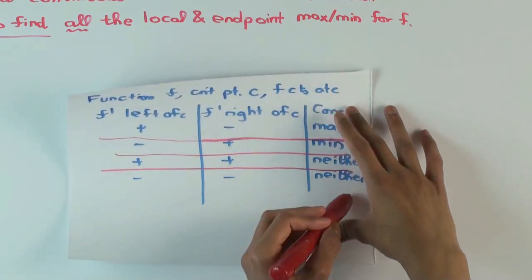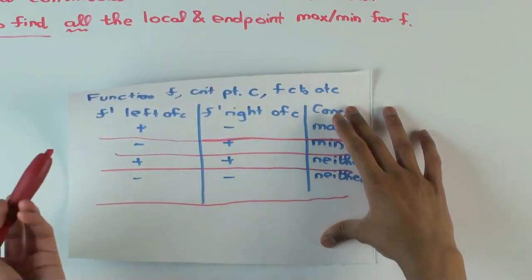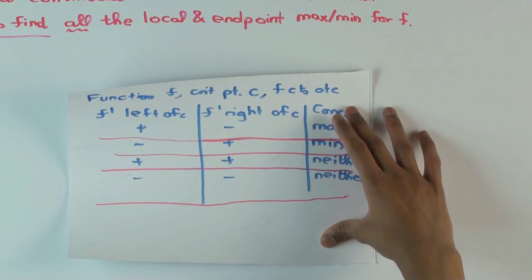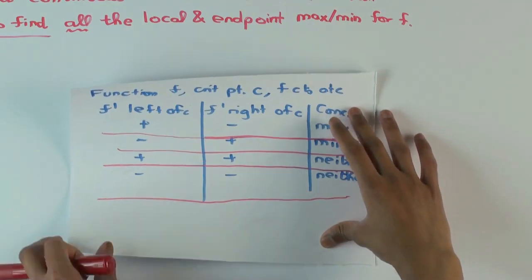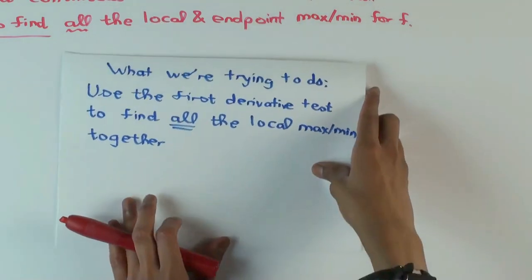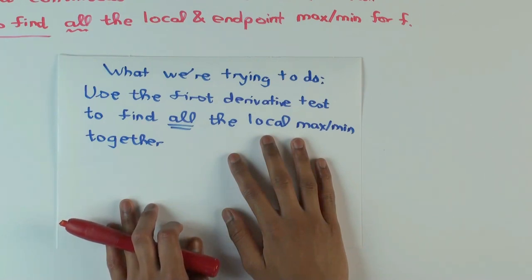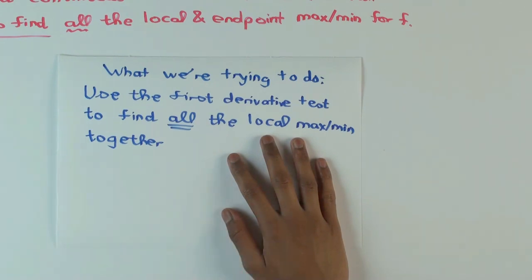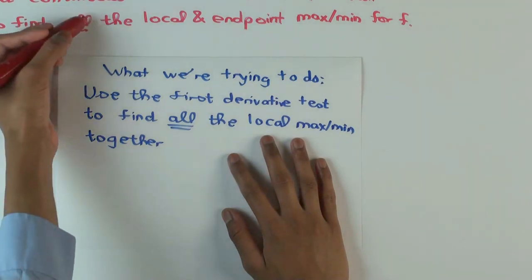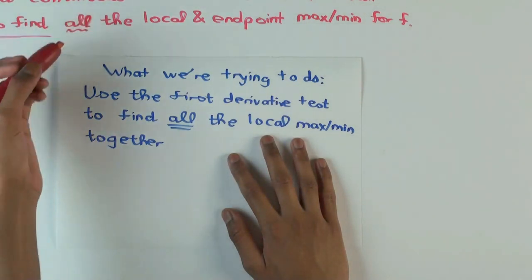This test was seen from the viewpoint of being given a particular critical point and figuring out whether it's a local max or min. But now we want to repurpose this test to find all the local max and min together. You're doing everything together, so you should have some economies of scale — you won't be checking each one individually, but doing a procedure which gives you all of them together.